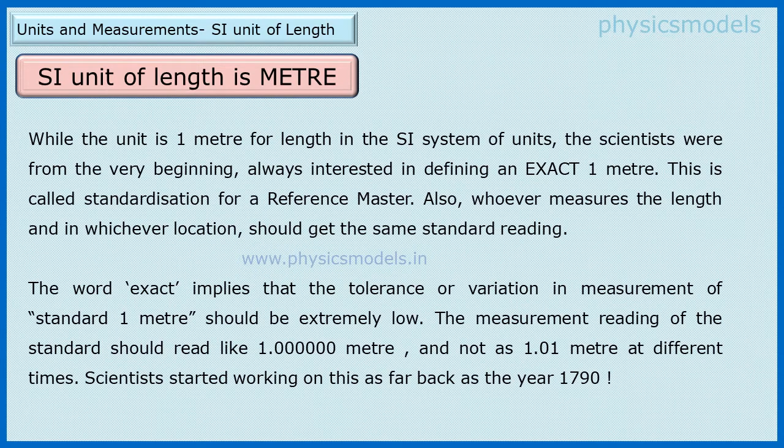However, the scientists were interested in defining an exact 1 meter. By exact, it was meant 1.0000 and it should not vary depending on who measured it, where he measured it, and how.